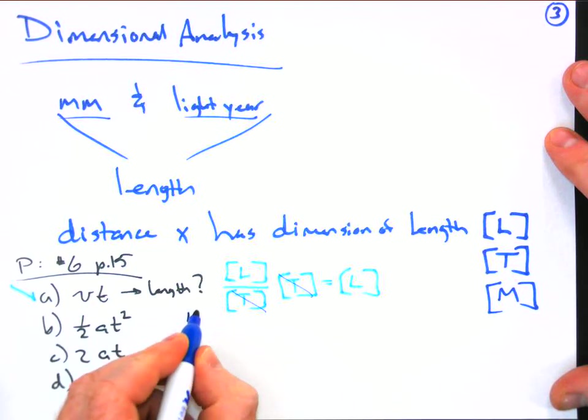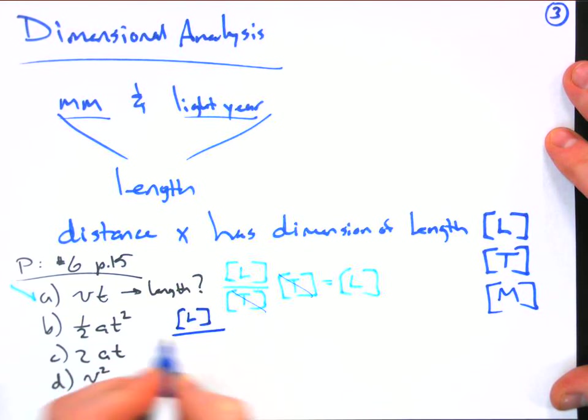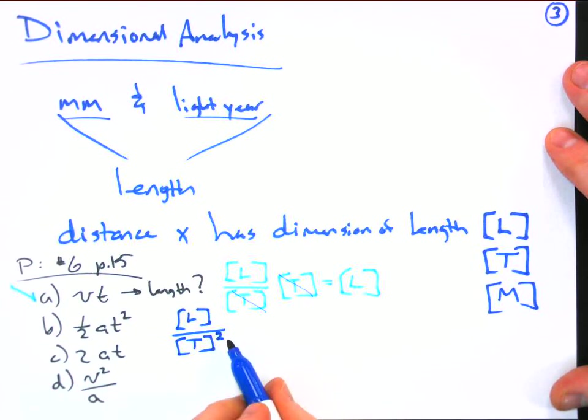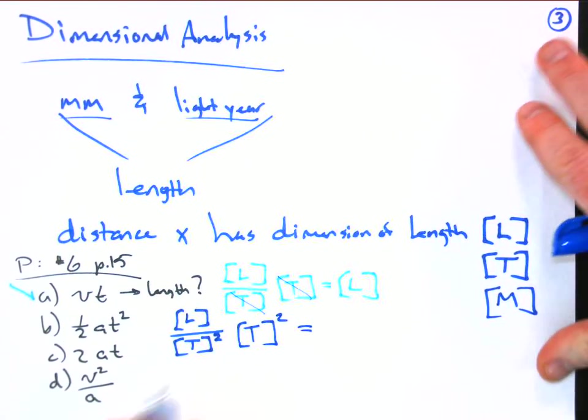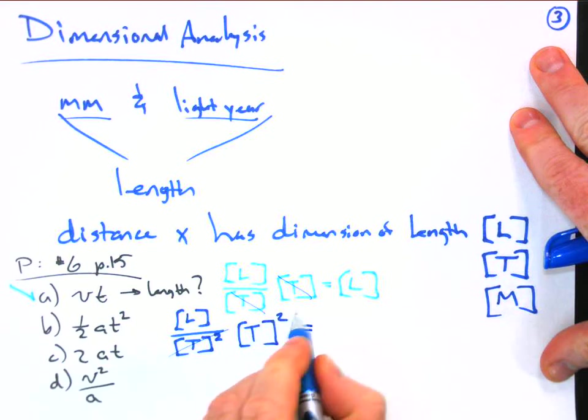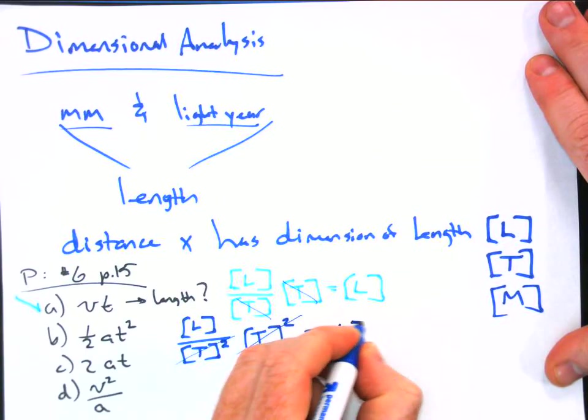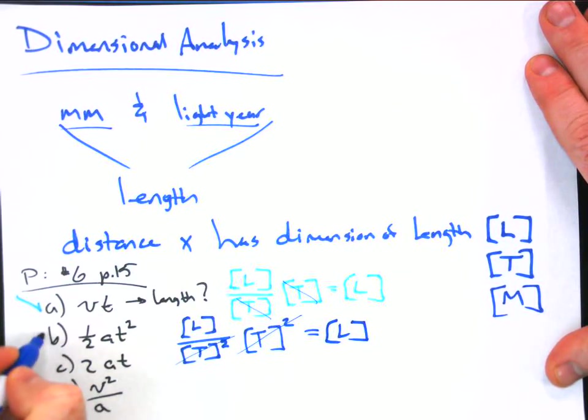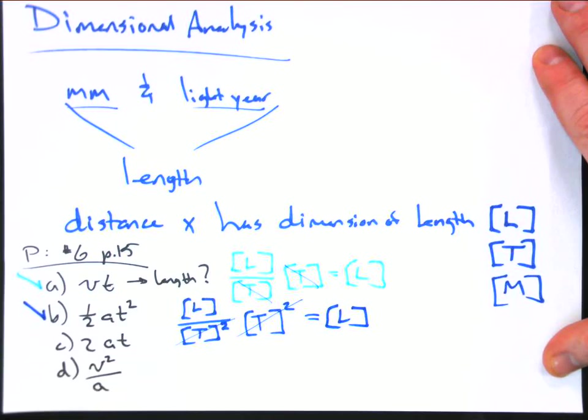And then we're multiplying by time squared. Okay, so what's going on here? This time squared and this time squared go away, and you are left with just length. So yeah, B checks out.